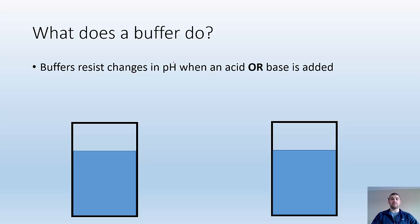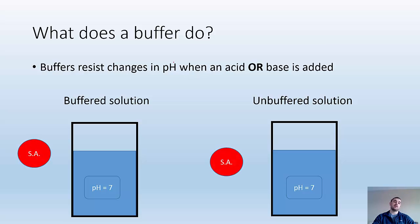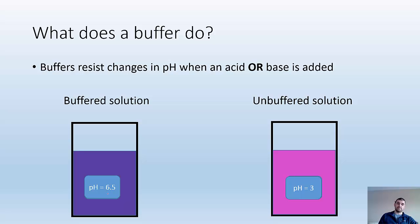So what do buffers do? Buffers resist change in pH when an acid or a base is added. Let's say I have a buffered solution on my left and an unbuffered solution on the right. If I add a strong acid to my buffered solution, it's going to change the pH, but not by a whole lot, especially compared to what happens in the unbuffered solution. Unbuffered changes pH a lot more — buffered changed like 0.5 and the unbuffered changed like 4. Dramatic change in unbuffered solutions when compared to buffered.